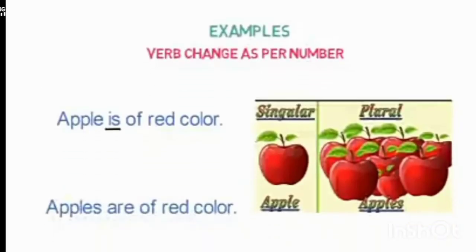Another example of how the verb changes as per number: when I say 'Apple is of red color,' the verb is 'is.' But when I say 'Apples are of red color,' the verb changes from 'is' to 'are.' So that was the example of verb changing as per number. I hope you all have understood what a finite verb is — a verb that changes as per tense, person, or number.